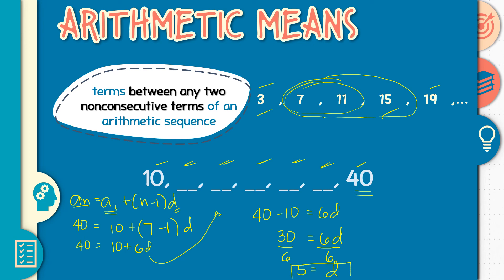Hindi pa tapos doon. Alam na natin kung ano yung idadagdag. So kung ang common difference ay 5, anong kasunod ni 10? Yes, 15. Kasi plus 5 ng plus 5. 20, 25, 30, 35, 40. Okay. So nabuo na natin ang sequence. Ganun lang siya. Kung kailangan nyo pa ng example, magchat sa akin na nabibigyan ko pa kayo ng iba pang example.